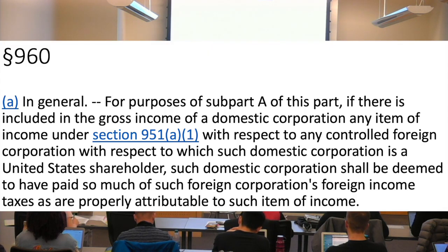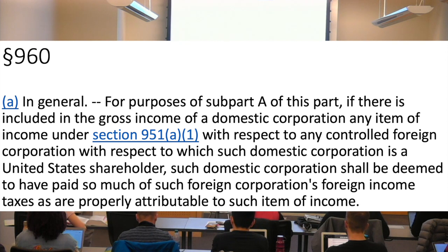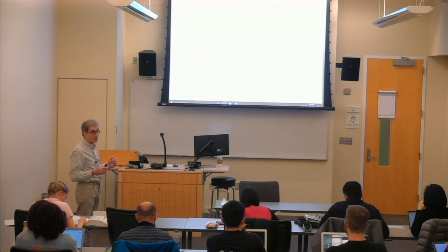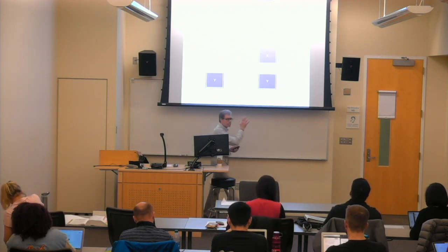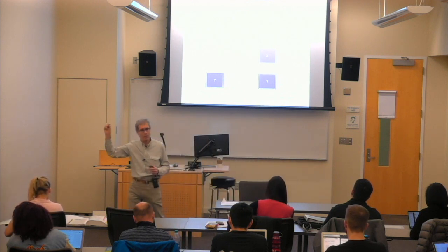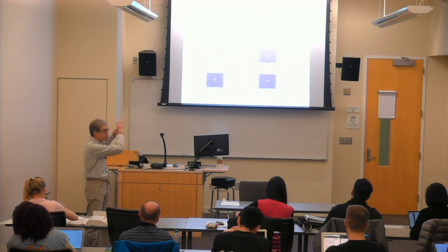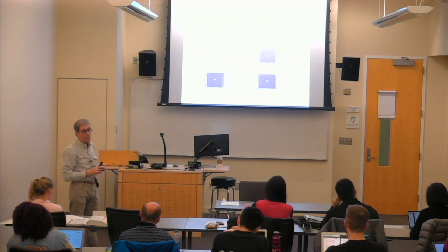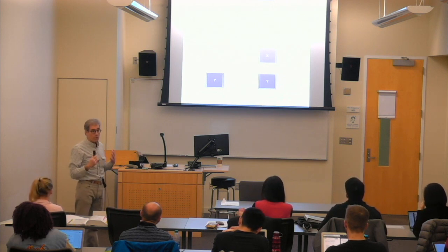And what about the 25? Section 960 addresses this — it says that such domestic corporation, X, shall be deemed to have paid so much of such foreign corporation's foreign income taxes as are properly attributable to such item of income. That 25 is a direct tax on Y. Section 960 allows X to treat this as deemed paid and claim a credit. Importantly, it says 'domestic corporation' — an individual is not allowed this deemed paid tax credit for indirect taxes.